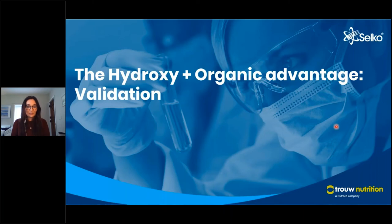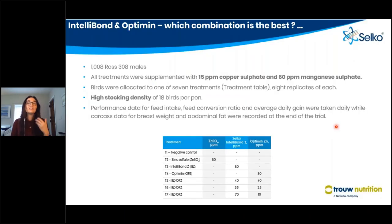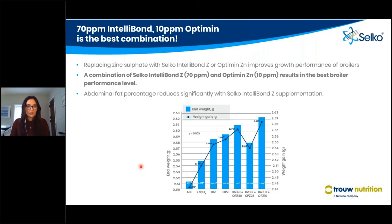To validate the hydroxy-plus-organic advantage, we wanted to understand whether combining Intellibond and Optimin provided a performance benefit. We tested a number of different treatments. Looking at end weight (bars) and weight gain (line), we compared a negative control, an inorganic treatment, a full Intellibond, a full Optimin, and different combinations of Intellibond and Optimin together. We found that the 70% Intellibond plus 10% Optimin zinc combination was consistently the best in terms of both weight gain and end weight.